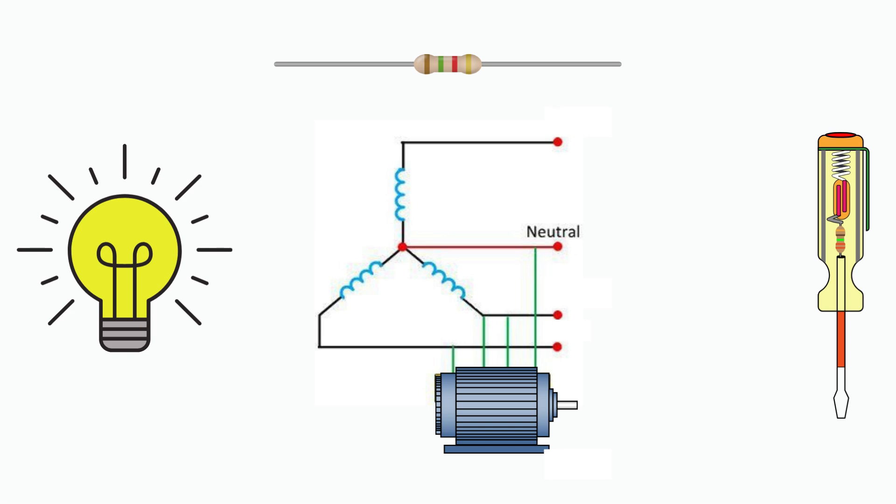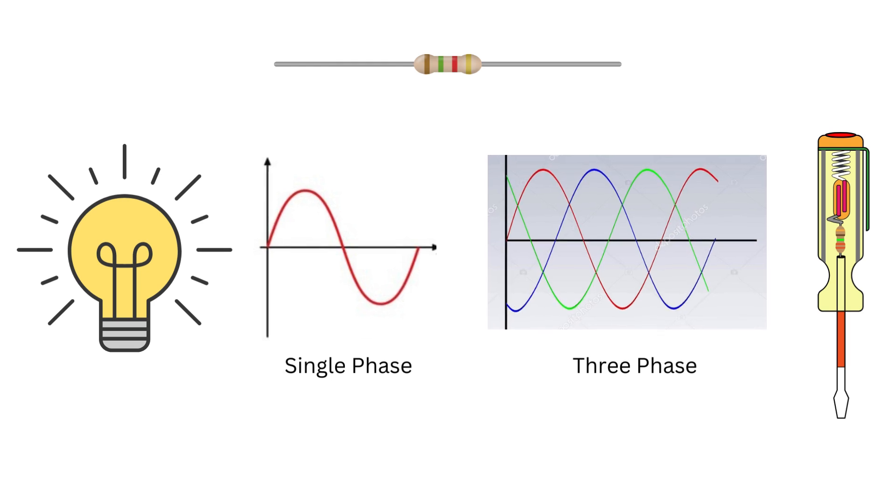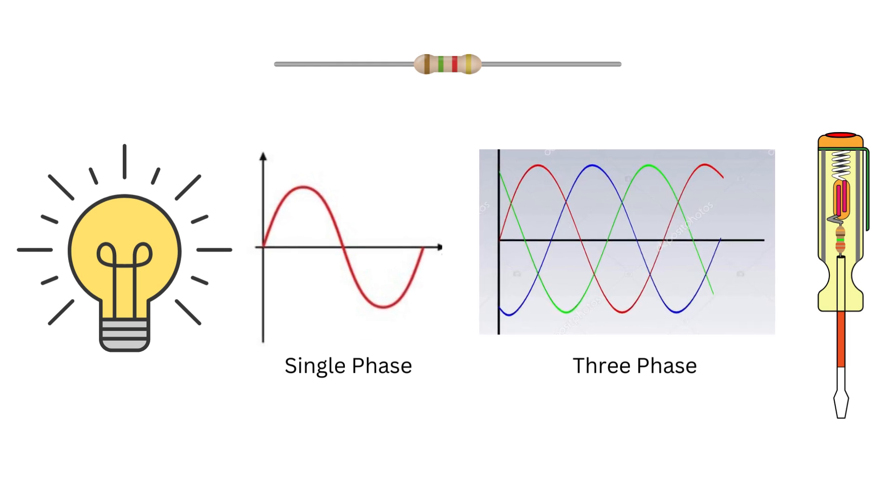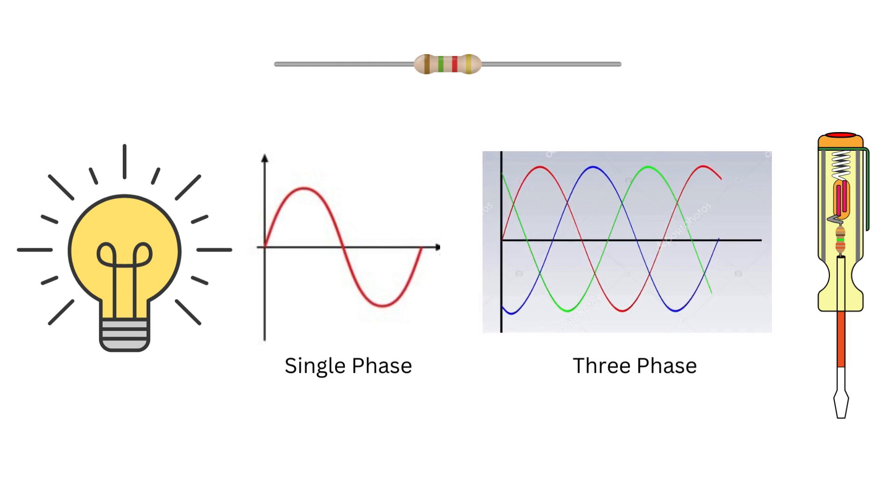Let's break down the key differences. Single phase power uses one wave of electricity, simple and good for small loads like home appliances. Three phase power uses three waves of electricity, more complex but great for large machines and industrial applications.